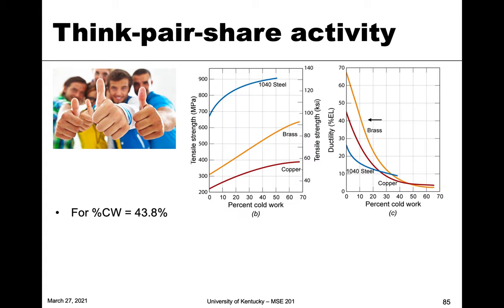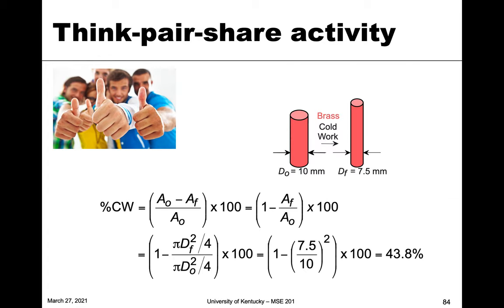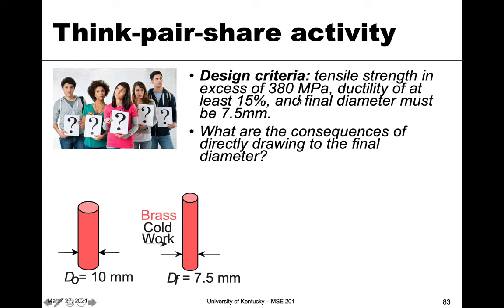Going back to the plots of tensile strength and ductility for brass — at 43.8 percent cold work, we're looking at somewhere around here on the curve. Reading up to the brass tensile strength curve, we get approximately 540 megapascals. Our design criteria required exceeding 380 megapascals, so we've met that — 540 is great.